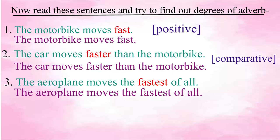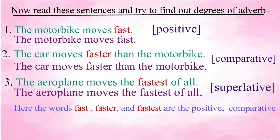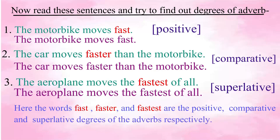In the last sentence, there is the word 'fastest', showing the superlative degree. The superlative degree is used to show who or what has performed an action in a specific manner to the greatest or least degree. So the words fast, faster, and fastest are the positive, comparative, and superlative degrees of the adverb respectively.